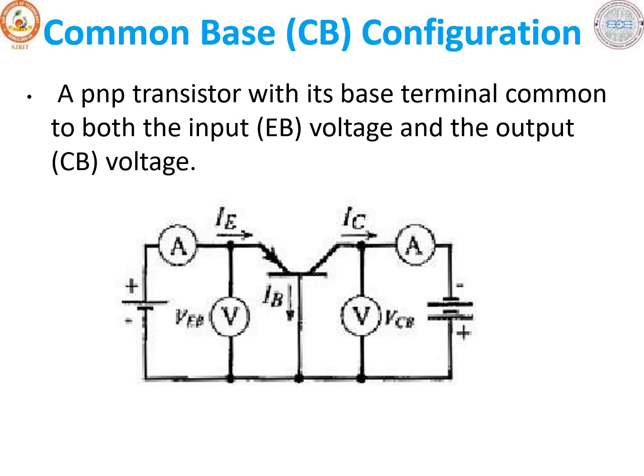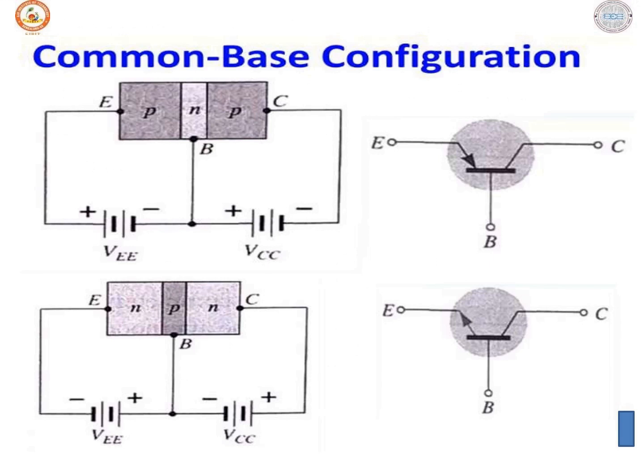In the common base configuration, the base is made common to both input and output. As you can see in the circuit, the base terminal is common to both input and output. We have taken a PNP transistor as an example; similar connections can be made for an NPN transistor. The base terminal is common to both the input (emitter-base terminals) and the output (collector-base terminals).